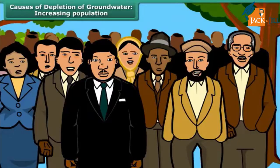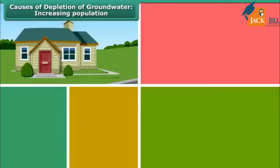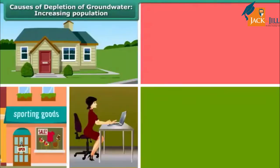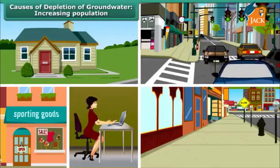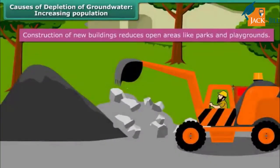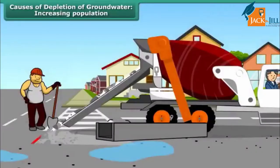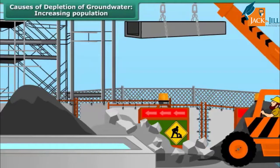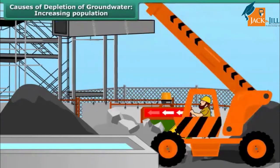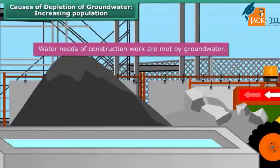World population is increasing fast. People need more space for houses, shops, offices, roads, and pavements. Construction of new buildings reduces open areas like parks and playgrounds. Laying of concrete roads prevents seepage of rainwater into the ground. Moreover, a large quantity of water is required for construction work, and groundwater is often used for this purpose. All these factors lead to the depletion of groundwater.